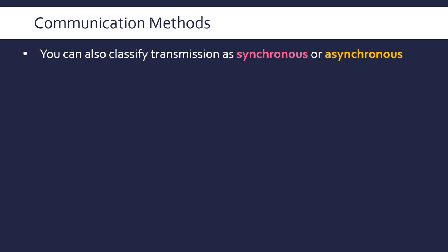We've looked at two communication methods already — parallel and serial transmission — and two separate methods where the two pairs are separate. Now we have synchronous or asynchronous transmission.